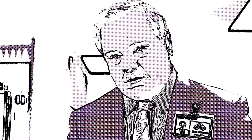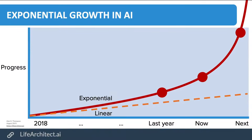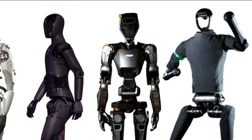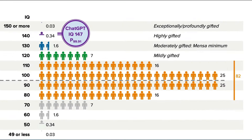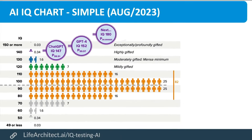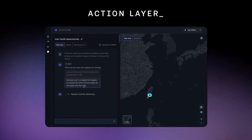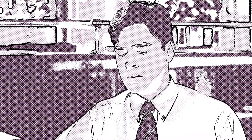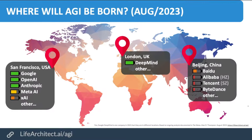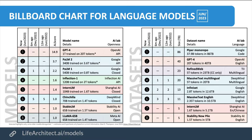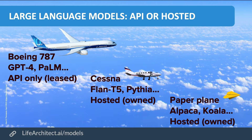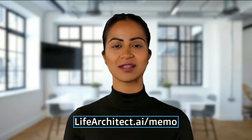Did you get that memo? I got the memo. Get the inside look as AI models are embodied into humanoids, AI's IQ increases to nearly perfect, and bleeding-edge use cases expand to the entire world. Editions are sent to subscribers at Fortune 500s, major governments, and people like you. Lifearchitect.ai/memo.